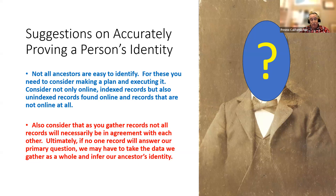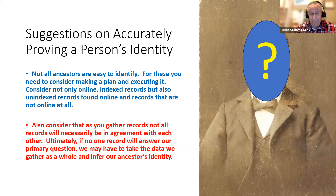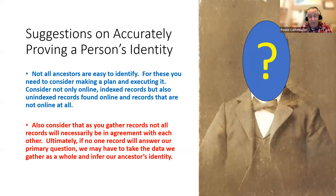Records have their own issues. Sometimes they were just clerical mistakes. Sometimes people misstated things deliberately. Ultimately, no one record may even answer our question. We're going to have to take the combination of all our records, and if they don't agree enough, we may even have to do some inferencing — which is not something we really want to do, but occasionally we just have to infer our ancestor's identity. Hopefully we can get there with good research, but it doesn't always happen, so just be aware of that.